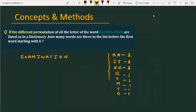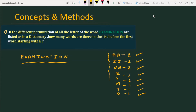The problem is: if the different permutations of the letters of the word EXAMINATION are listed as in a dictionary, how many words are there in the list before the first word starting with E? The word given is EXAMINATION. Counting the alphabets used: two A are available, two I are available, two N are available, one E, one X, one M, one T, and one O.